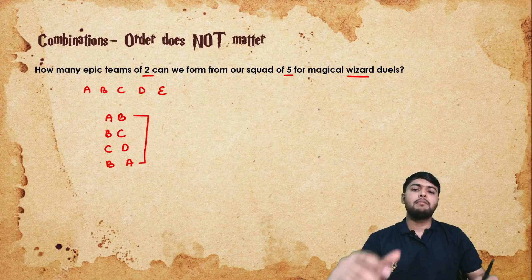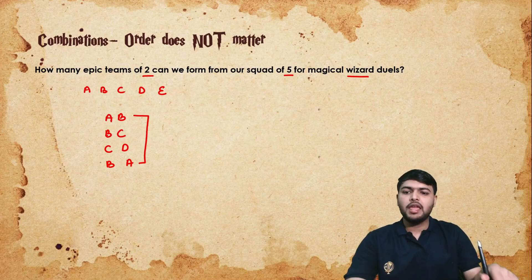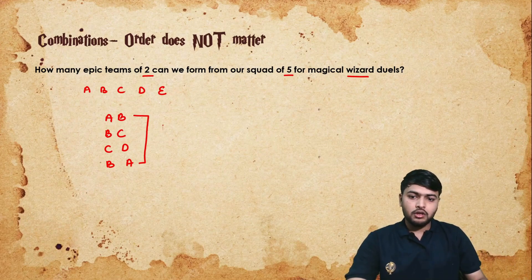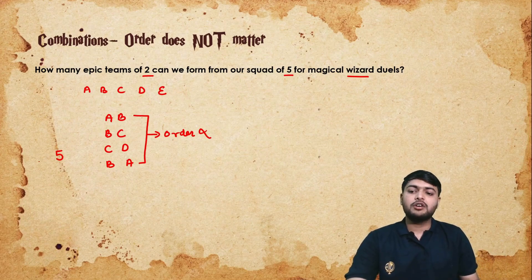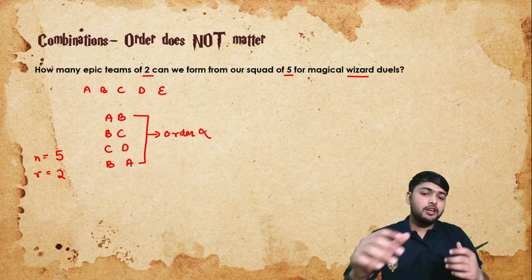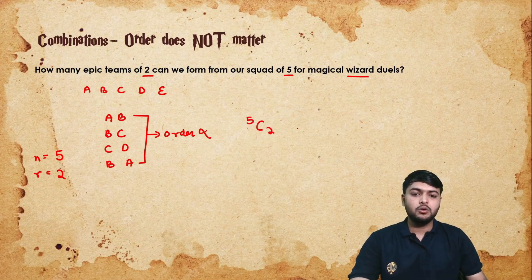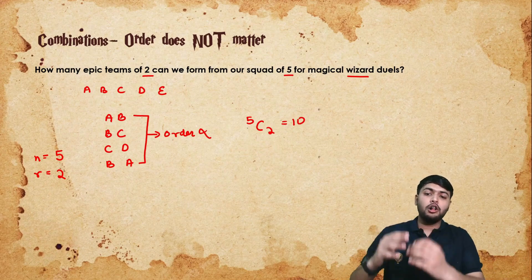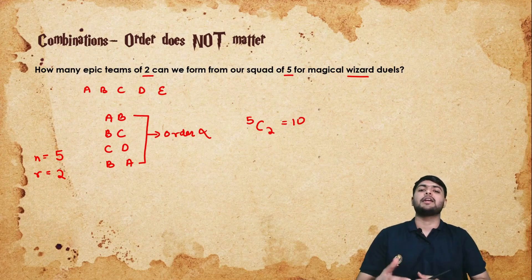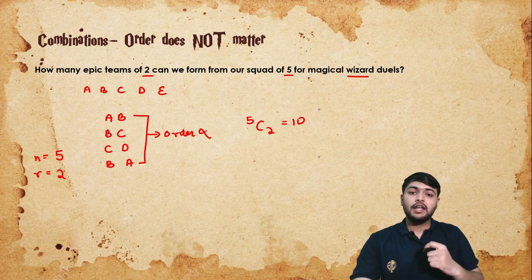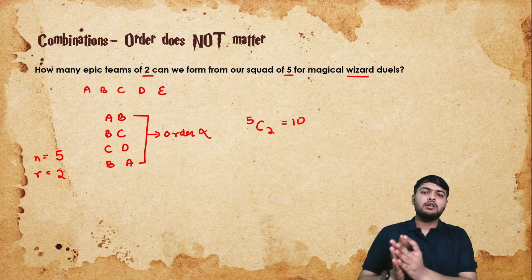Now, are AB and BA the same team or different teams? They are the same team — AB and BA form the same squad. So here order does not matter. There are 5 total items, n is 5, and you require 2. Whenever you are selecting r items out of n items and order does not matter, you apply the formula for combination. So here n is 5 and r is 2 — apply 5C2. We already calculated 5C2 = 10. So there are exactly 10 teams of 2 that you can form.